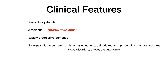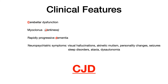Additional neuropsychiatric symptoms include visual hallucinations, akinetic mutism, personality changes, seizures, sleep disorders, ataxia, and dysautonomia. The mnemonic to remember CJD's clinical features is CJD itself: C for cerebellar dysfunction, J for jerkiness (myoclonus — those brief shock-like muscle twitches, startle myoclonus in CJD), and D for dementia, specifically rapidly progressive dementia.